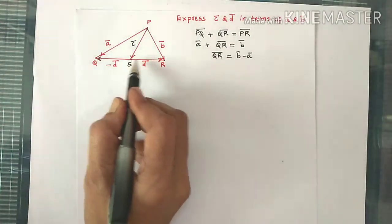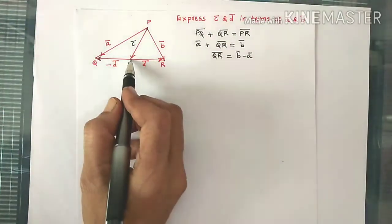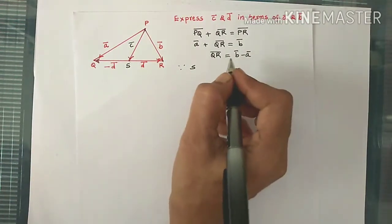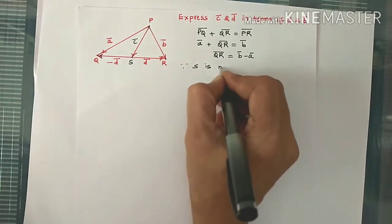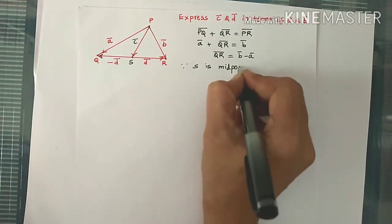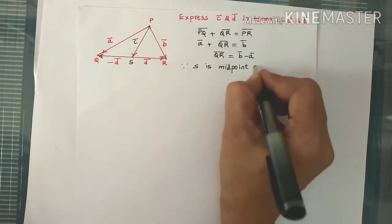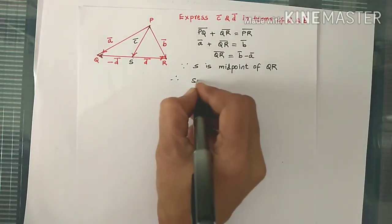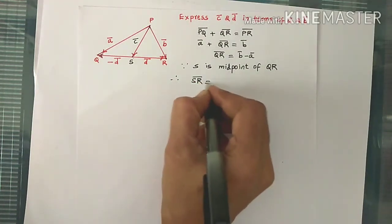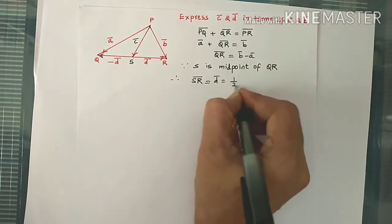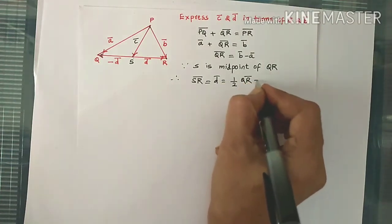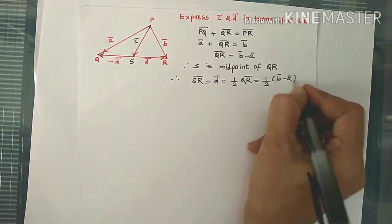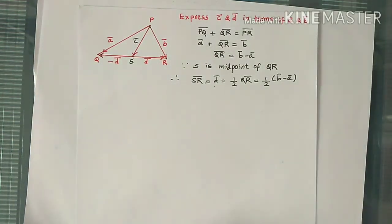But SR bar is half of QR bar as S is midpoint. Since S is midpoint of line segment QR, SR bar — that is D bar — is equal to half QR bar, and QR bar is B bar minus A bar. So D bar becomes half of (B bar minus A bar).